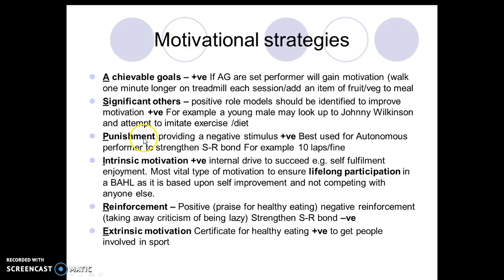Another way to motivate someone is through punishment, which involves providing a negative stimulus. It's best used for autonomous performers because it strengthens the stimulus-response bond towards the desired response. For example, in a balanced, active, healthy lifestyle context: if somebody hasn't stuck to their diet plan, you say they have to do ten laps around the athletic track. That is a negative stimulus — it weakens the stimulus-response bond towards the undesired response.